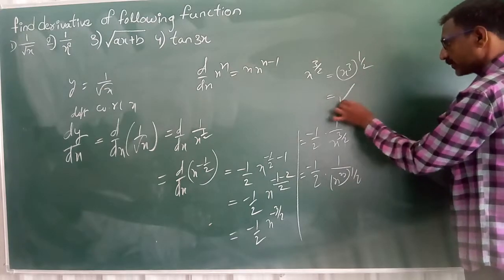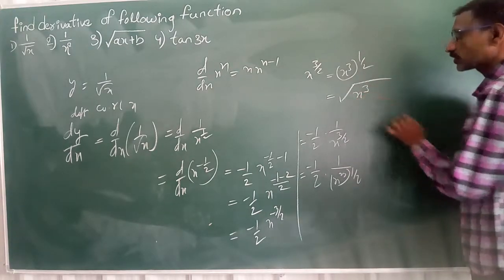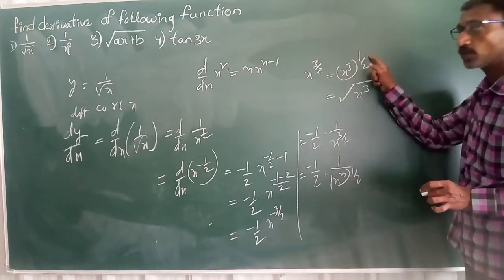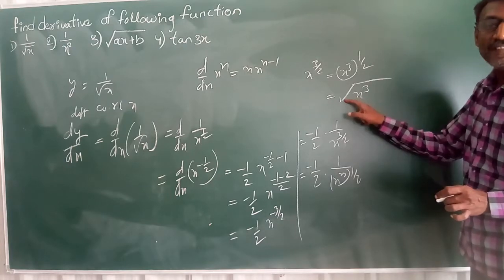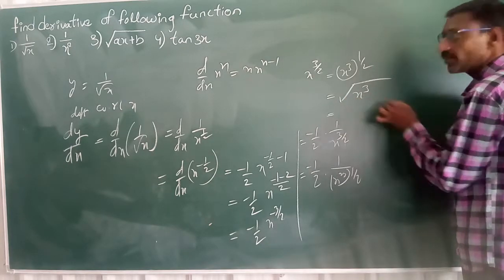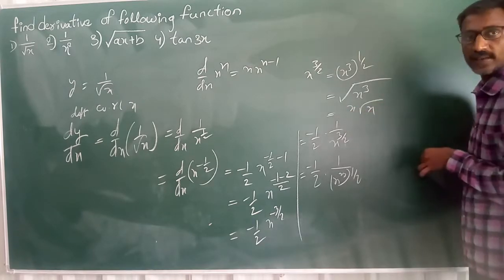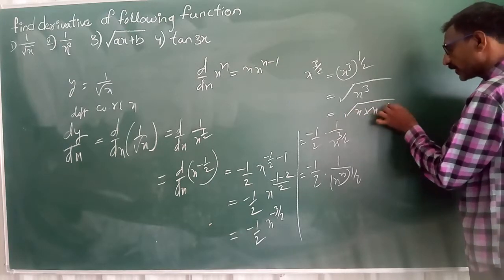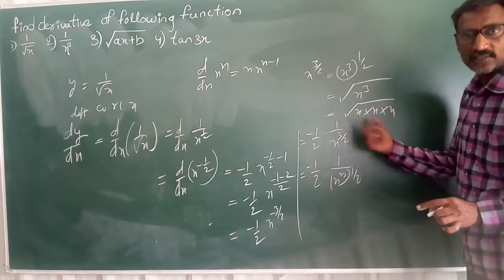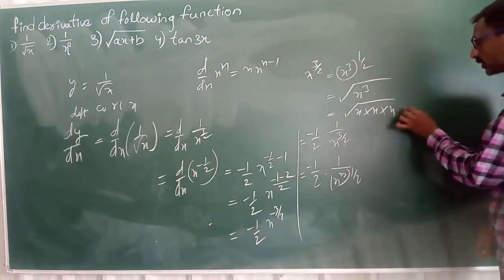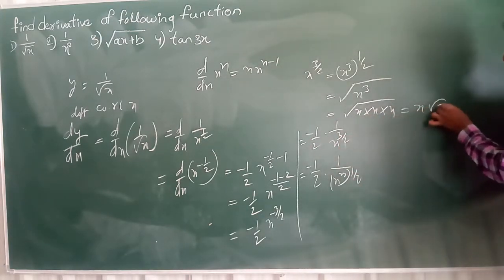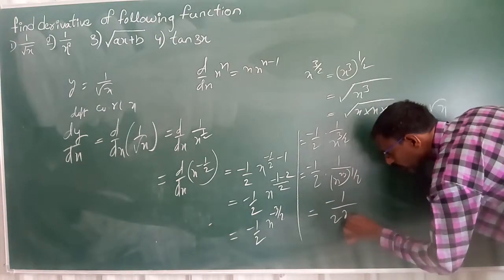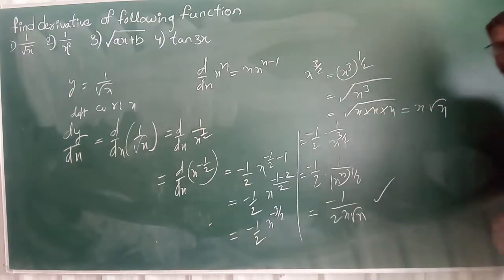This is radical form. This is nothing but x square root of x. This is exponential form written in radical form. So this is x into square root of x. See here, x into x into x. For every 2 x, 1 x goes out from the square root. This is nothing but x root of x. So this is nothing but minus 1 by 2 into x root of x. This is the answer.